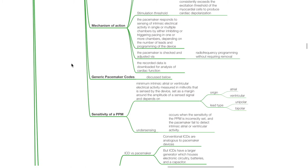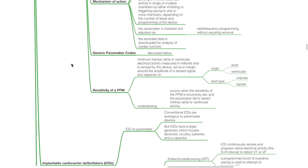Generic pacemaker codes will be discussed in the section below. Sensitivity of a pacemaker refers to the minimum intrinsic atrial or ventricular electrical activity measured in millivolts that is sensed by the device, set as a margin around the amplitude of a sensed signal, and depends on the origin — atrial or ventricular — and the lead type — unipolar or bipolar.